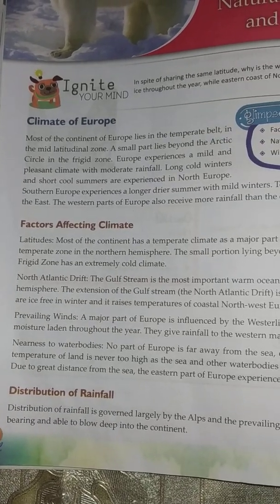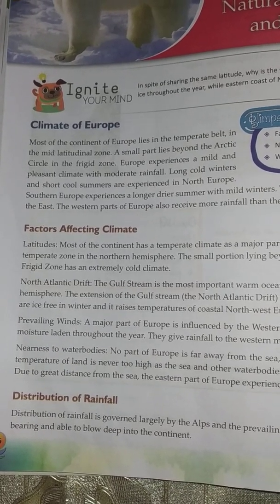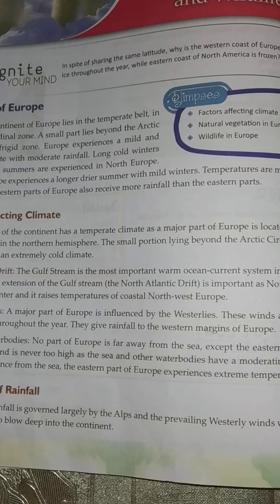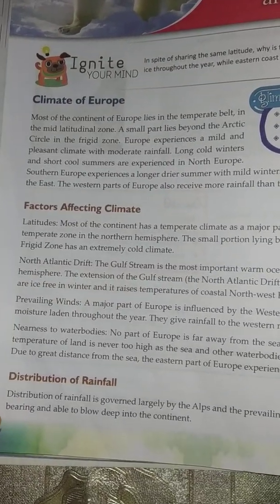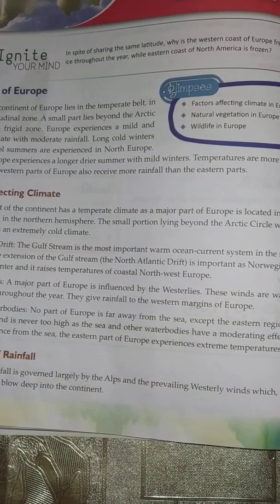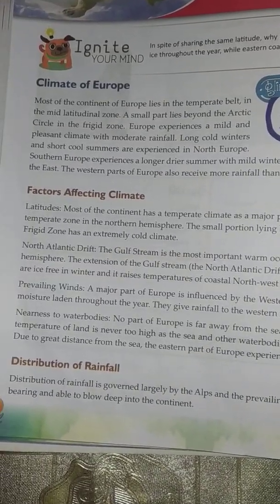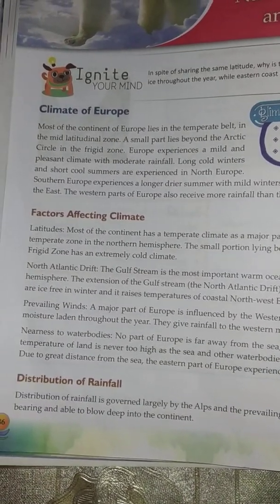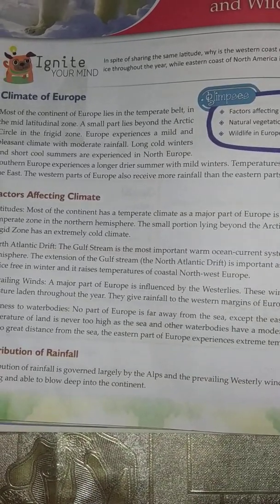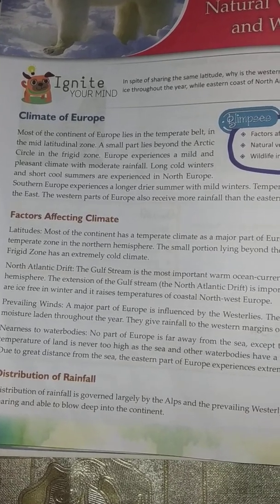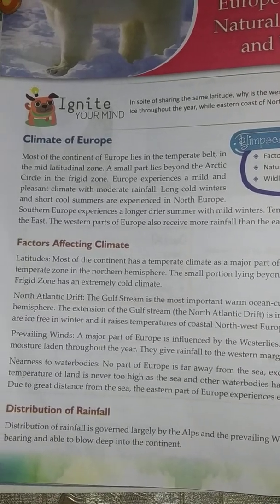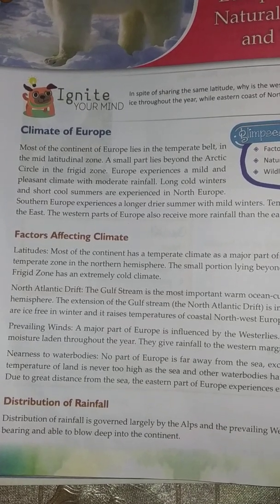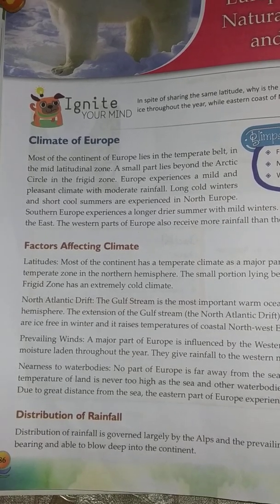In and around the Arctic Ocean, after crossing the Arctic Circle, that portion comes under the frigid zone. Next is the North Atlantic Drift. The Gulf Stream is the most important warm ocean current in the northern hemisphere. The extension of the Gulf Stream, the North Atlantic Drift, is important as Norwegian ports are ice-free in winter and it raises the temperature of coastal northwest Europe.